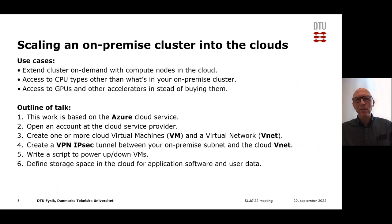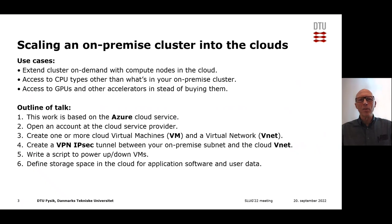The concept of scaling an on-premise cluster into the clouds is interesting because of a number of use cases. Examples would be to extend your cluster on demand with compute nodes that are actually in the cloud. This gives you different possibilities — for example, you can gain access to other types of CPUs than what you have on-premise so that you don't need to buy them. Similarly, you can gain access to GPUs and other types of accelerators instead of buying them. You might not be able to use those types of hardware all of the time, so it may actually be cheaper to buy access to them in the cloud.